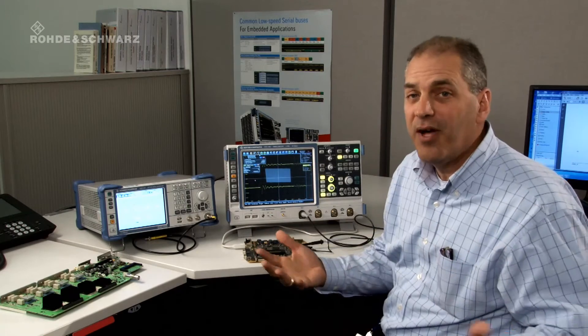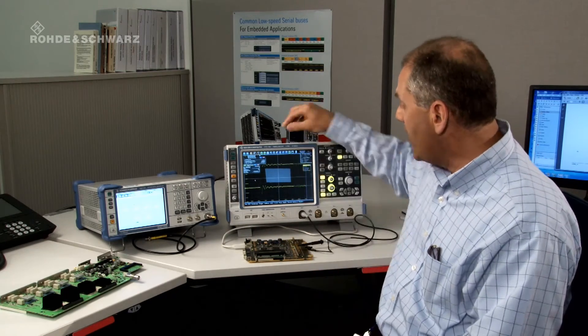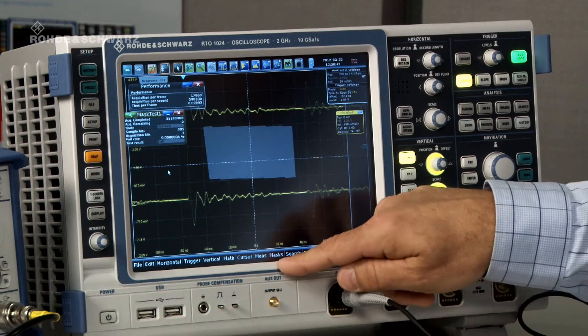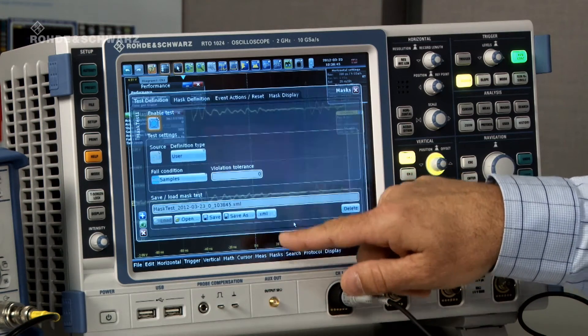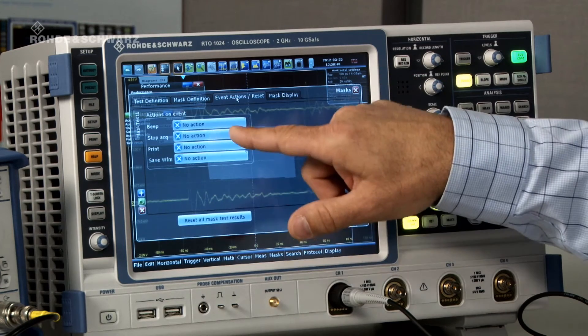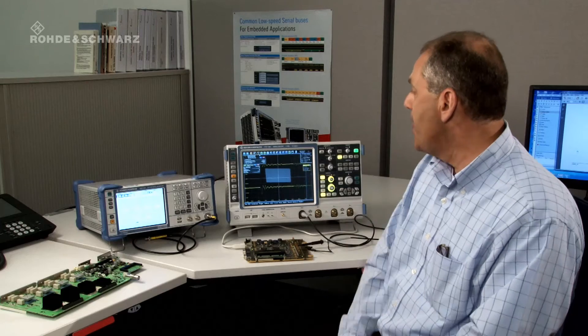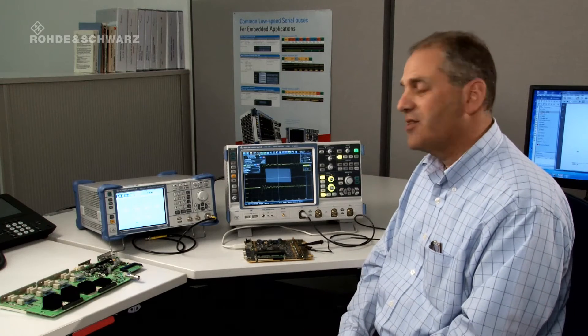Of course, no one would wait days to find an error so they probably wouldn't find the error. So let's go ahead and set this thing up to capture an error. And what I'm going to do is I'm going to tell the instrument to stop next time it finds an error. And so I'm going to go in event actions and say stop acquisition on violation. And we're going to wait just a few seconds to see what happens.